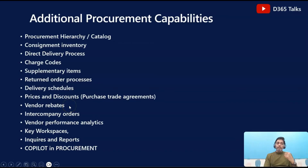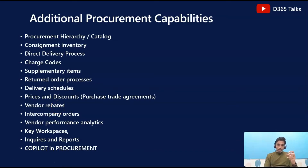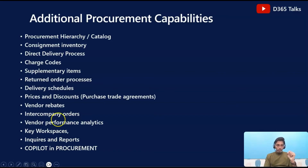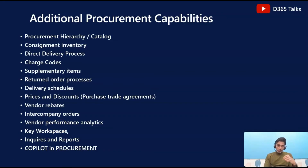We will also try to understand vendor rebates and intercompany orders at a very high level. I know these are very important topics and maybe a separate series of videos is required for vendor rebates and intercompany orders. If you want a separate series, please make sure you share that in the comment section — I will make a note for future series. We will also cover vendor performance analytics and the various options available within Dynamics 365 F&O.